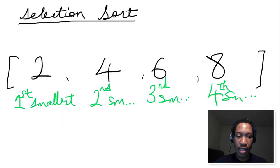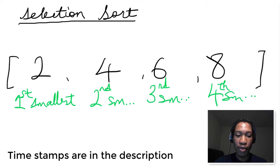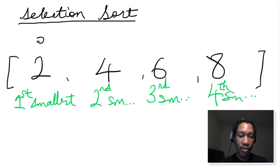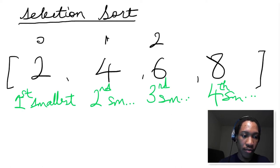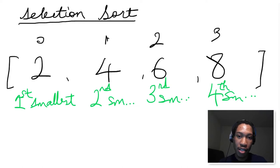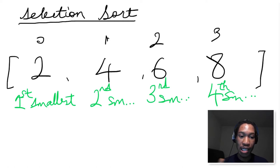So we have an array of elements 2, 4, 6, 8, and the elements in this array are sorted in ascending order. If we take a look at the very first element at index 0, this element is the first smallest element in the array. The second element at index 1 is the second smallest, index 2 is the third smallest, and index 3 is the fourth smallest. So the first number should be the first smallest element in the array. If we could figure out what the smallest number in the array is, we could swap it with whatever number is at index 0, because we know for sure that index 0 should contain the smallest number.